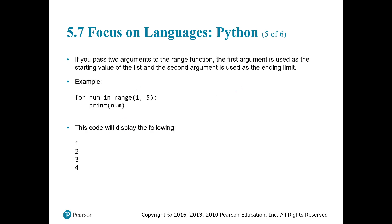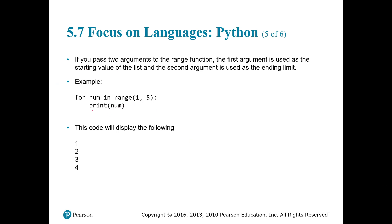If you want to start your range from a different number you can do that — just specify the first argument you pass to the range function as your starting value. For example, for each number in range from two to four, switch the first number to two and the second to four. Remember: the starting number is always included, but the ending number is not. So in this case the loop runs for two and three only — not four.